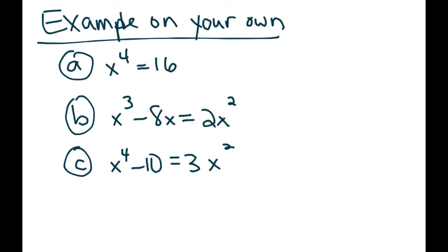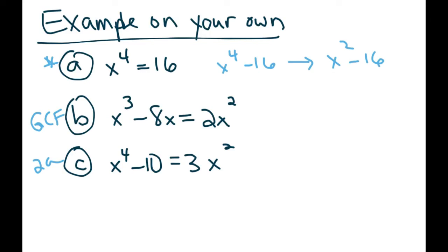These are the three problems I'd like you to try on your own. C is like problem 2a that I had just done. B — get it equal to zero and then take out a greatest common factor; you may still have to use the quadratic formula, you may not. A — I'm going to give you a little hint: once you set it equal to zero, pretend it says a quadratic, because if it does, it factors into x plus 4 times x minus 4 — except that it really wasn't a quadratic, it was actually a quartic. Now you can finish using the zero product property and find all four solutions.